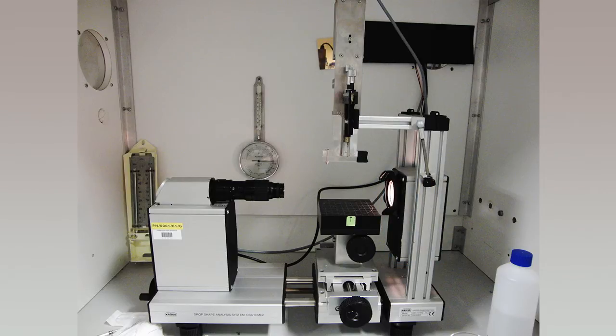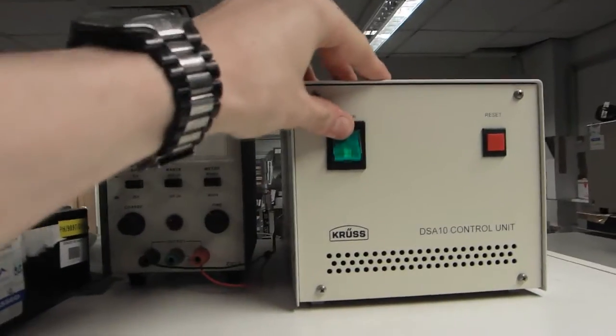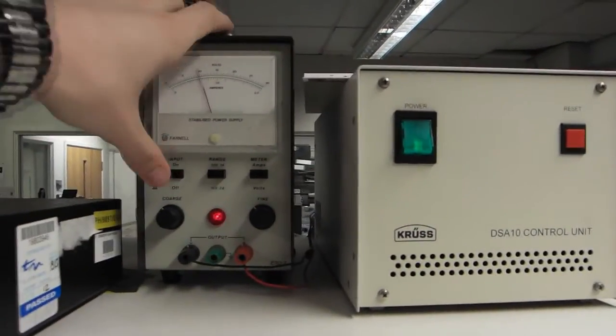Also in the enclosure are instruments for measuring the humidity and temperature as these may have an effect on results. The first step in making a measurement is to turn on the power to the control unit and the backlight.